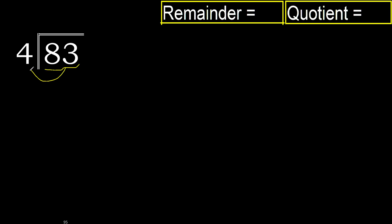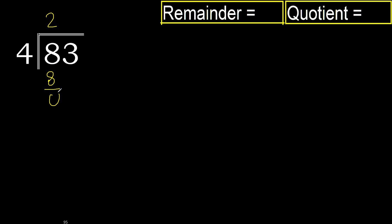83 divided by 4. 8 is not less, therefore start with 8. 4 multiplied by which number is nearest to 8 but not greater? 4 multiplied by 3 is 12 — 12 is greater. 4 multiplied by 2 is 8 — it's not greater. 8 minus 8 is 0. Next.